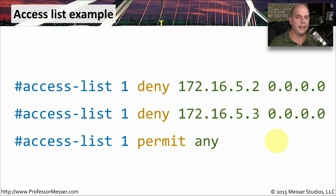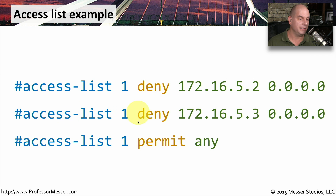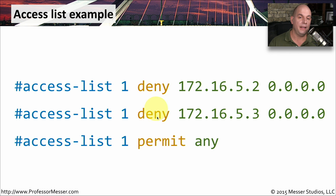Firewalls decide what traffic is allowed or denied based on a series of access lists. This example shows access list number one. There's a deny rule for traffic from 172.16.5.2 with a wildcard of 0.0.0.0, which refers specifically to that individual IP address — so deny that traffic. Another rule in the same access list denies traffic from 172.16.5.3. Those two rules block those specific IP addresses, and then a third entry permits any traffic. So this access list blocks those two IP addresses, and all other traffic is allowed through the firewall.